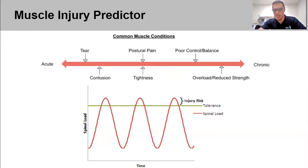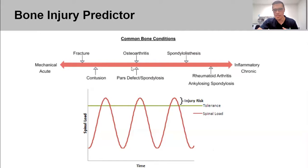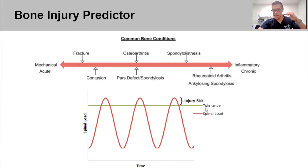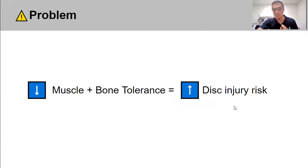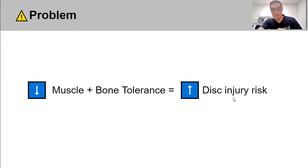The same load-versus-tolerance graph applies to bones — a heavy fall produces more load than the bone can absorb, causing fracture. A blunt blow causes bruising. Over time with less conditioning, the tolerance line gets lower. Critically, if your muscle and bone tolerance both decline, it increases the problem for your disc, raising your chance of developing a significant disc injury.